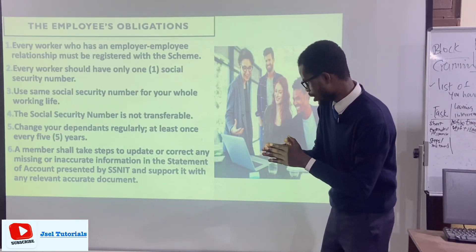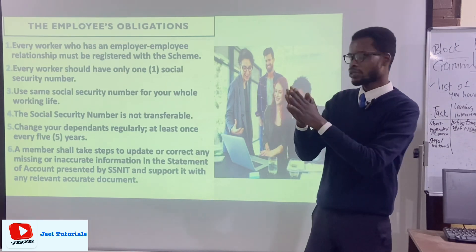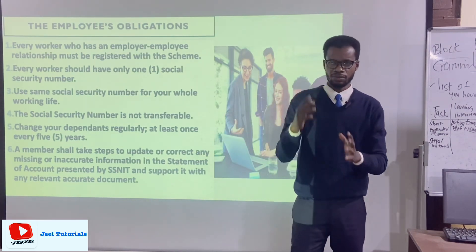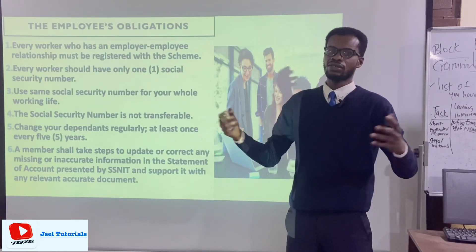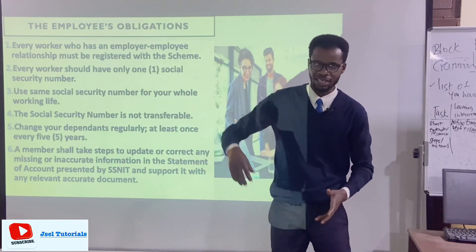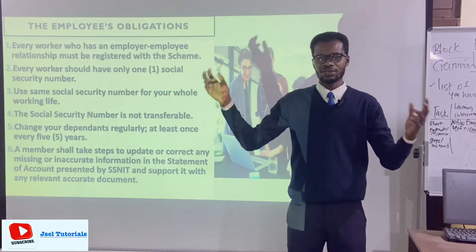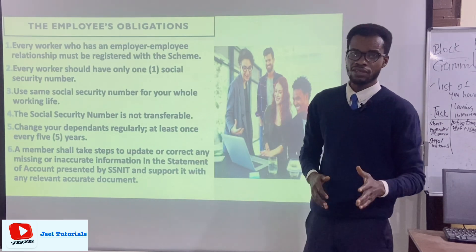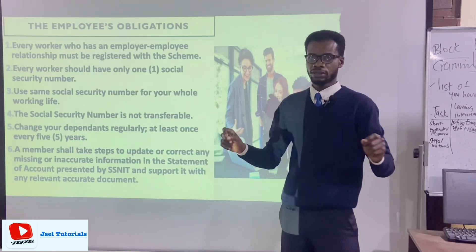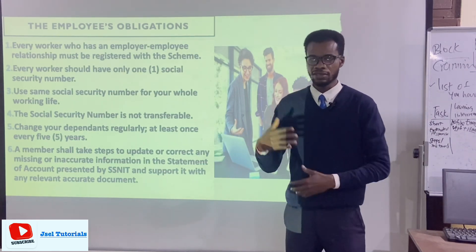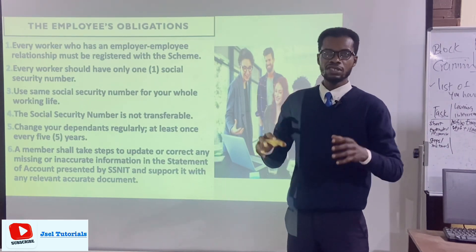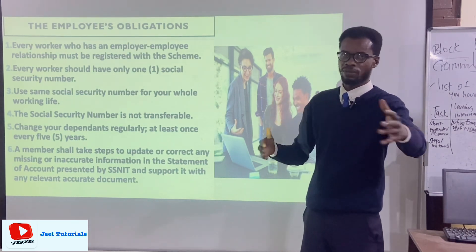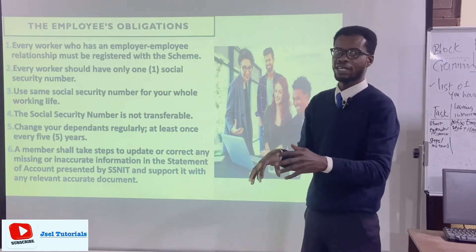A member shall take steps to update or correct any missing or inaccurate information in the statement of account presented by SSNIT, and support changes with relevant accurate documents. For example, if you are changing your date of birth, there must be an affidavit backing that. You cannot simply walk to SSNIT and change your date of birth without proper documentation. If your name was spelled wrongly or dependents' names need updating, you must go through the right procedures.